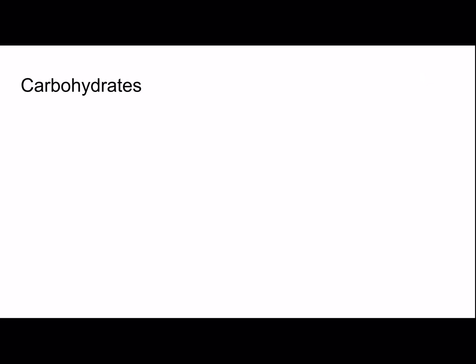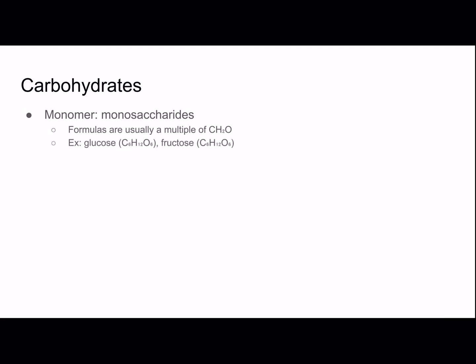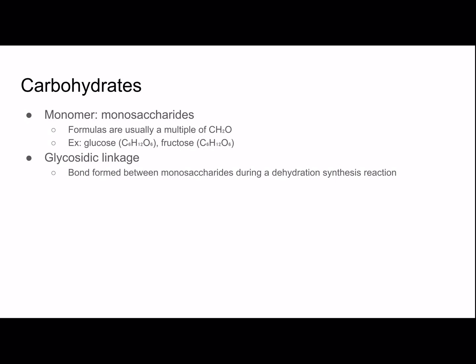The first group of macromolecules I'm going to discuss are carbohydrates. The monomer is monosaccharides, and monosaccharides usually have formulas that are multiples of CH₂O. Examples are glucose, which has a formula of C₆H₁₂O₆, and fructose, which has the same formula. These are structural isomers. A glycosidic linkage is the bond formed between monosaccharides during a dehydration synthesis reaction.